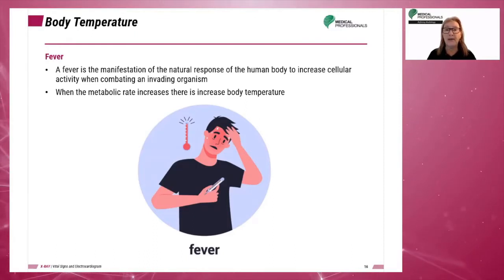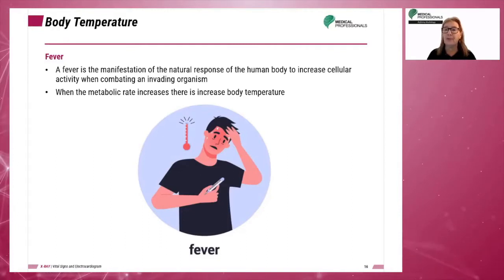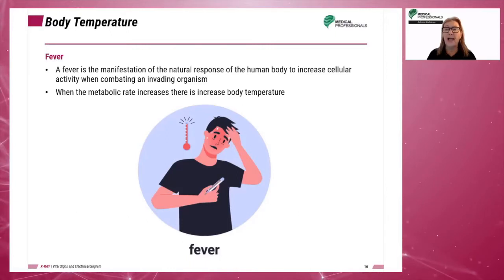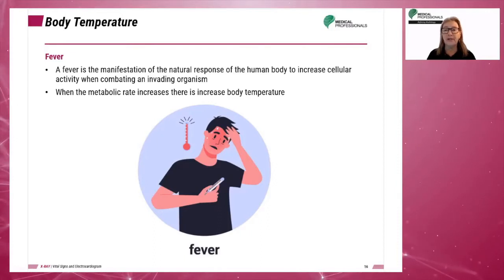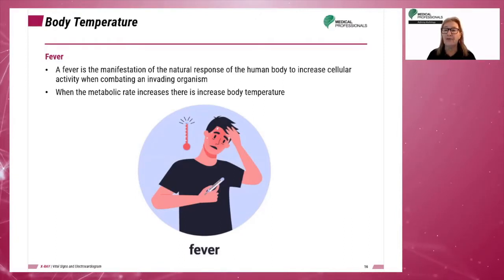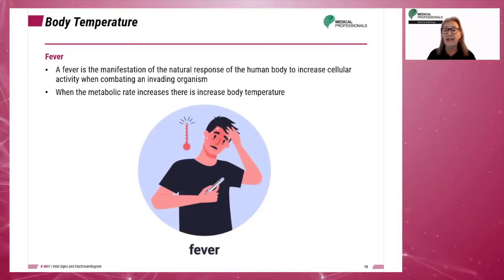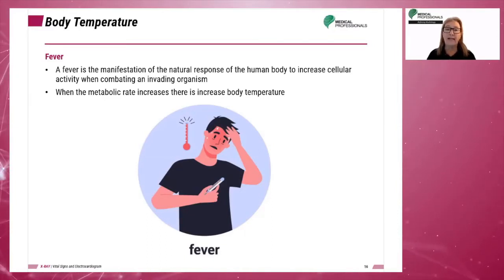With increased metabolic rate, the result is increased body temperature. Increased metabolic rate also needs more oxygen consumption and results in more carbon dioxide production at the cellular level. As metabolic rate increases, the cardiopulmonary system must work harder to meet the additional cellular demands. It must therefore provide more oxygen and eliminate more carbon dioxide.